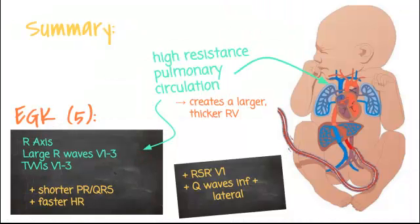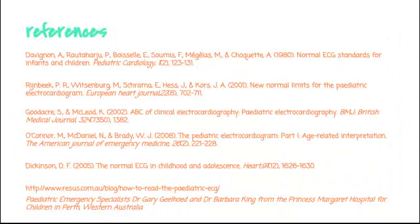In summary, we expect large RV predominance in pediatric EKGs due to the high resistance pulmonary circulation in utero. The normal findings include a right axis, large R waves on the right precordial leads, T wave inversions in V1 through V3, and a faster heart rate with shorter intervals. Thanks for joining us on EM in 5.